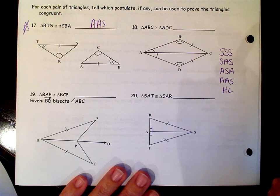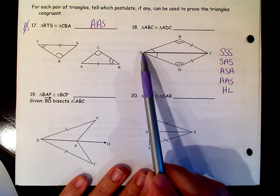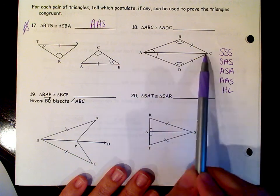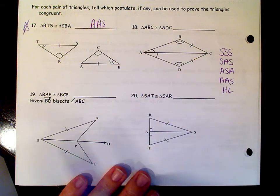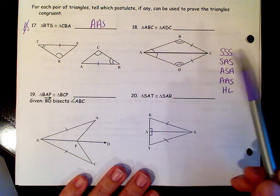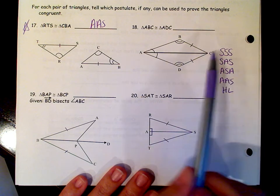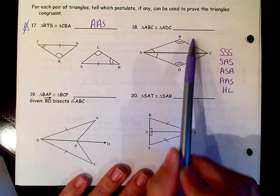On 18, we're asked to prove that triangle ABC and triangle ADC are congruent to each other. Again, they have segment DC and segment BC are congruent.